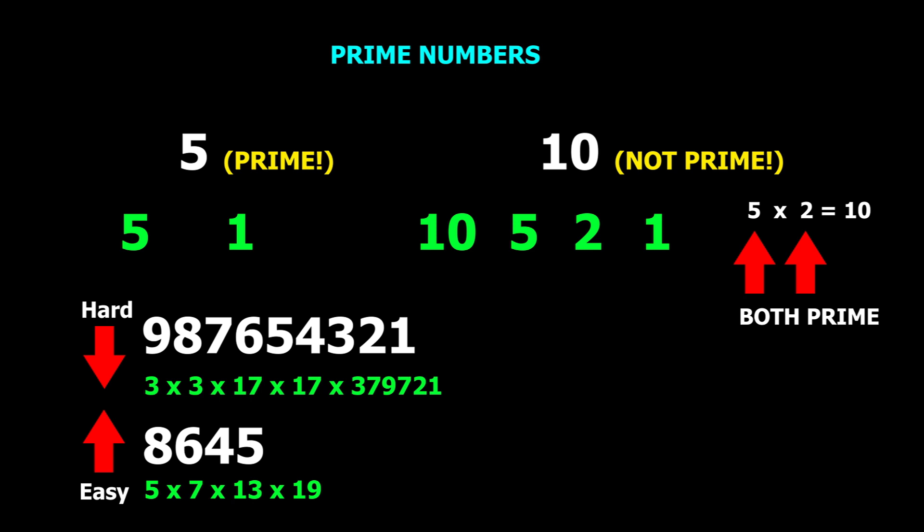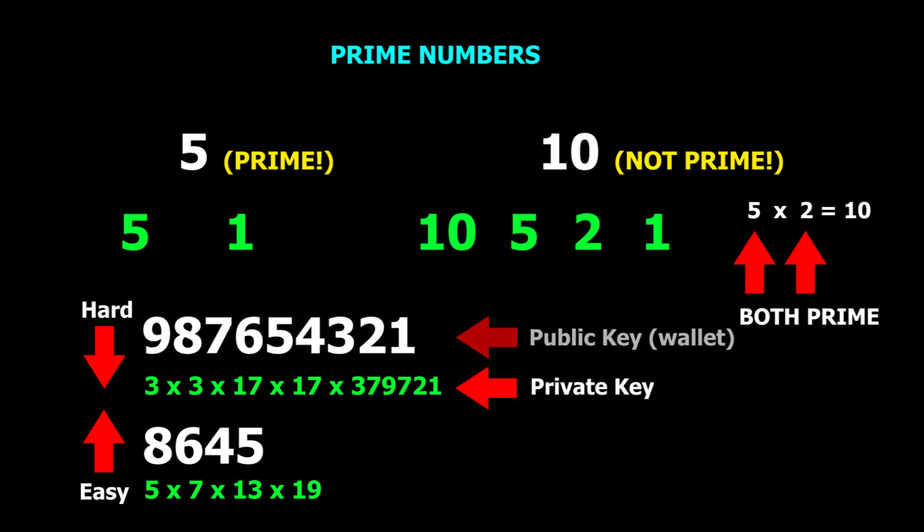To come back to Bitcoin and draw the analogy: the prime numbers are like the private key that is initially produced, and the number they build is like your public key. The takeaway is that anyone with the private key to an account controls that account — just like anyone with an email password controls that email. Public keys are only good for receiving, just like an email address.